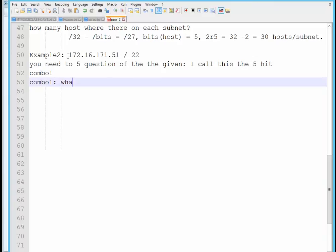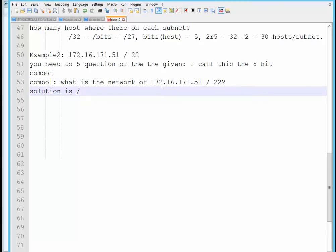Combo one, what is the network of this address? So the solution is, first and foremost, slash 22 is third-octet 4i. So the octet in question is 171 because this is the third octet. And you just need to ask yourself, what 4i is nearest 171?